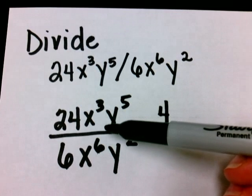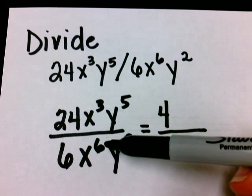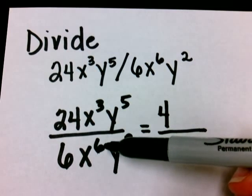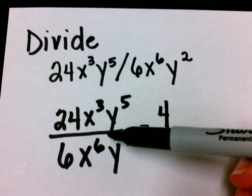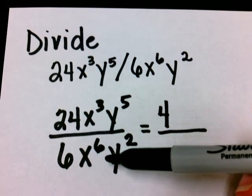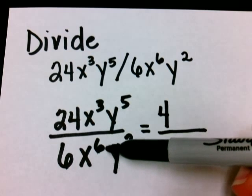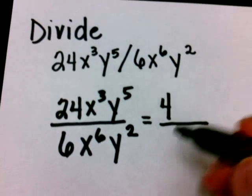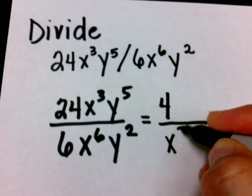Now let's look at the x's. I know that when I divide, I can subtract the exponents. So I'll do 6 minus 3. I know the new exponent should be a 3, but does it go on the top or does it go on the bottom? And the good rule of thumb here is, wherever the larger one is, that's where your answer goes. So we would put x to the third on the bottom.